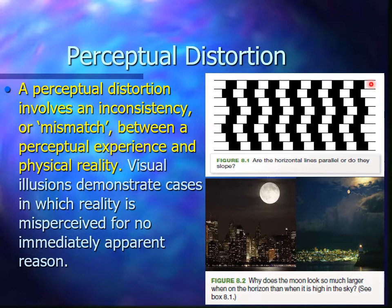Visual illusions demonstrate cases in which reality is misperceived for no immediately apparent reason. If you look at figure 8.1, the lines actually appear to be wonky, going off in weird and unusual ways. But if you look closely and put a ruler against it, all those lines are actually straight — there's an inconsistency between what you see and what is actually reality.